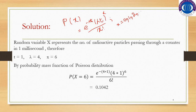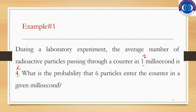Substituting the values: P(X = 6) = e raised to the power minus four times one, times four times one raised to the power six, over six factorial. Simplifying this with a calculator gives 0.1042, which is the probability that six particles enter the counter in a given millisecond.